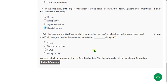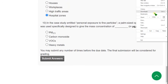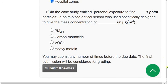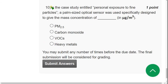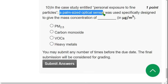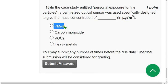Moving on to the final question of the assignment, that is the tenth question. In the case study entitled 'Personal Exposure to Fine Particles,' a palm-sized optical sensor was used specifically designed to give the mass concentration of dash. So it will give whose mass concentration? It gives PM2.5's mass concentration in micrograms per meter cube. So mark first option.